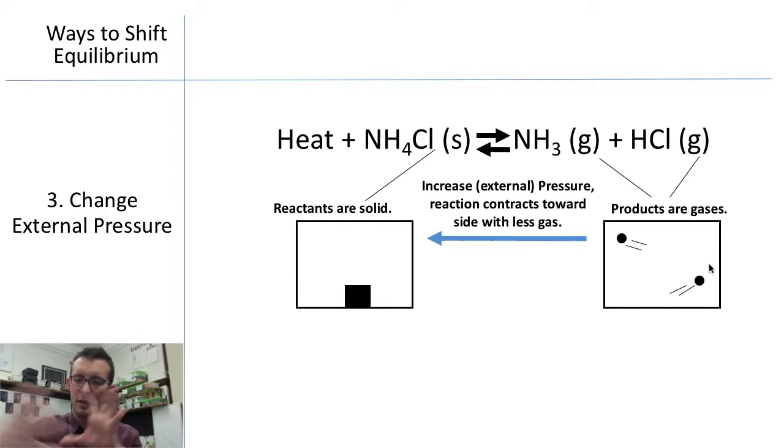And you can kind of see that intuitively happening. If you were to compress the system, the system will end up favoring whichever side is more dense. In this case, it's whichever side has less gases.